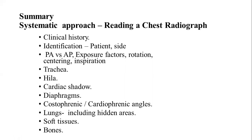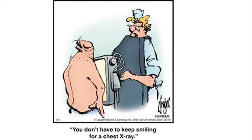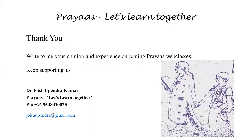In summary, while reading a chest radiograph, follow this pattern: take a clinical history, identify the patient's side (many times you can mistake dextrocardia or situs inversus), confirm PA or AP, check exposure factors, look for rotation, centering, and inspiration adequacy. Follow this checklist to complete reporting of the chest radiograph. Thank you all for joining this session — any feedback is most welcome.